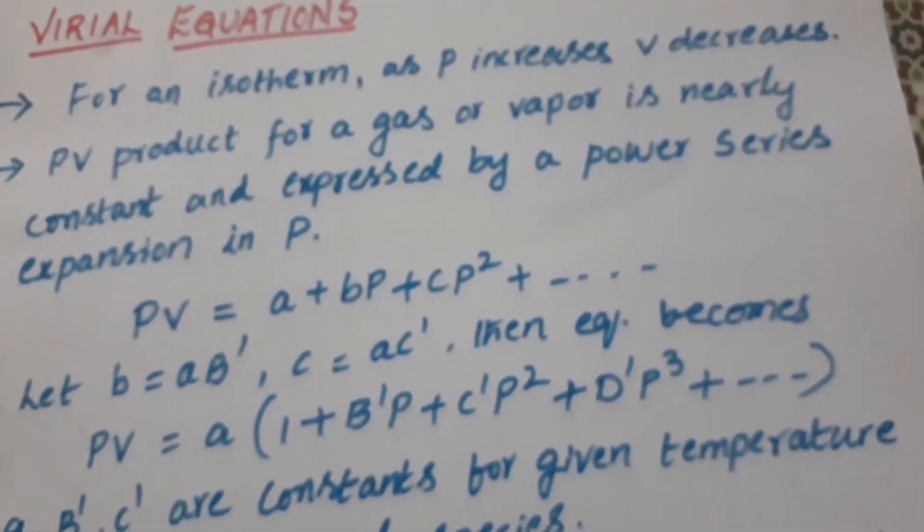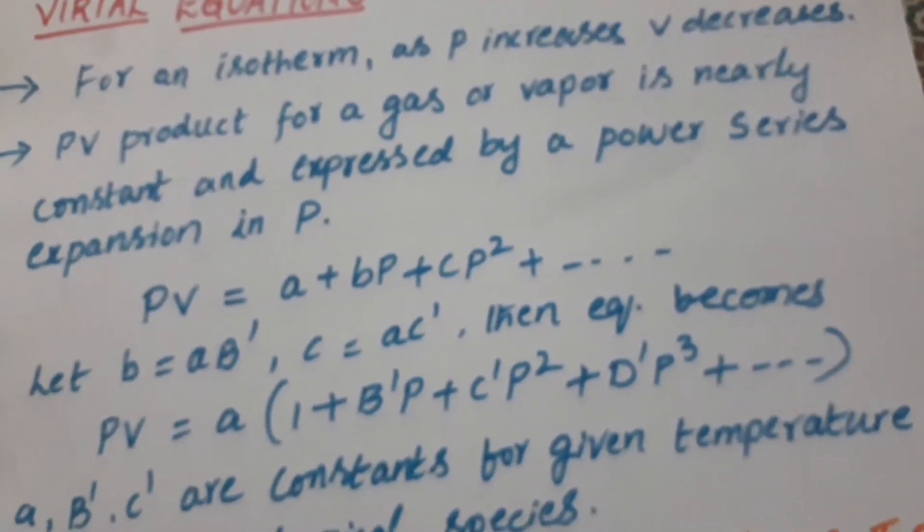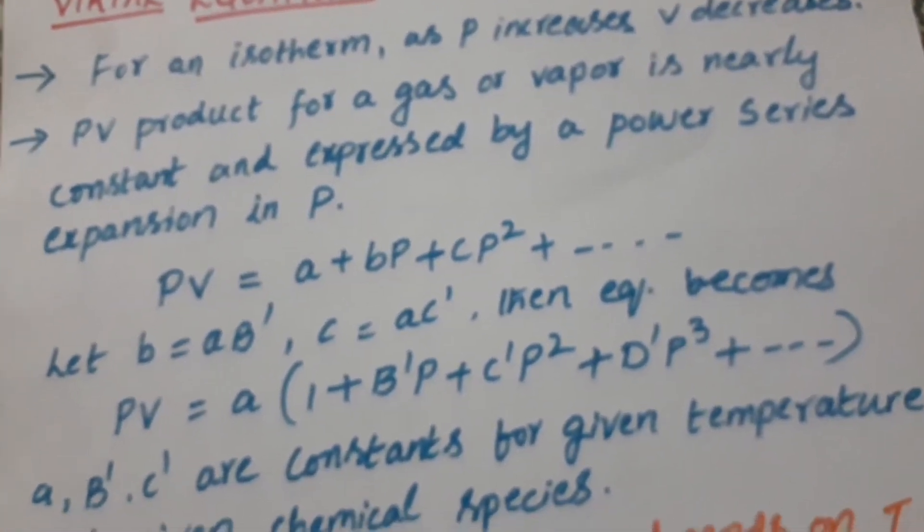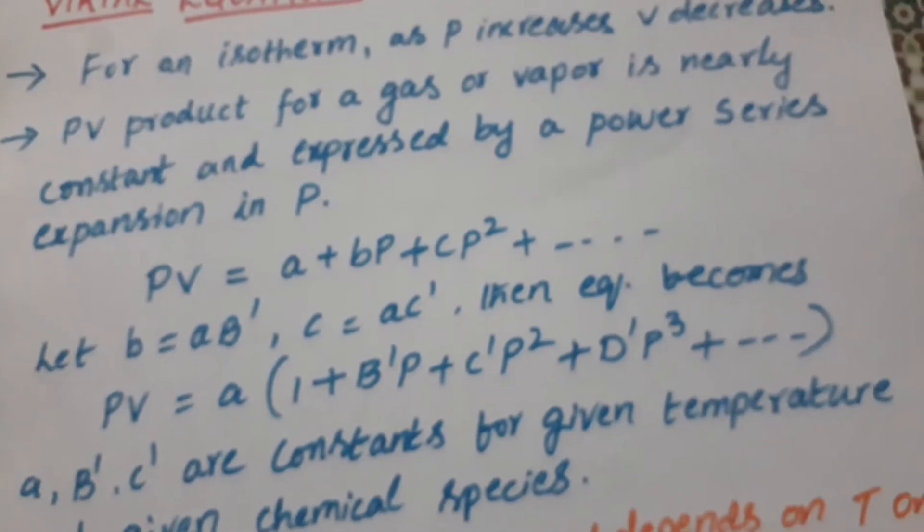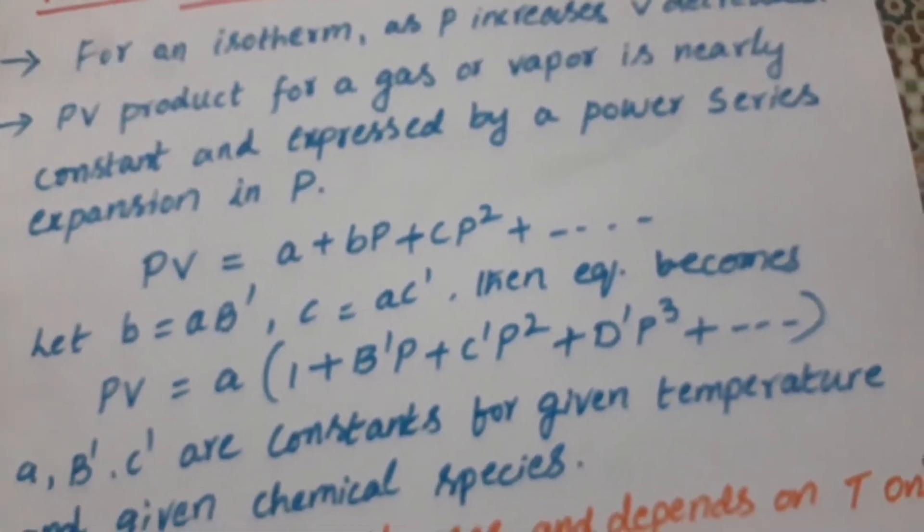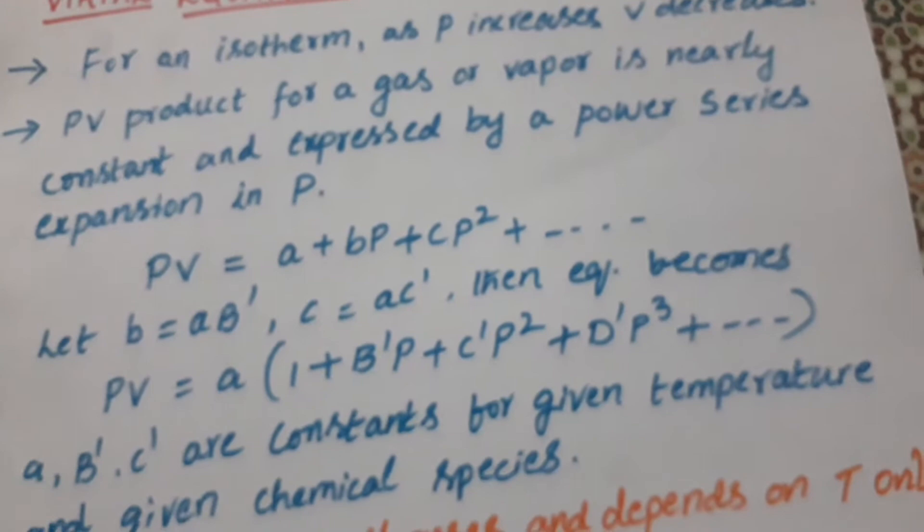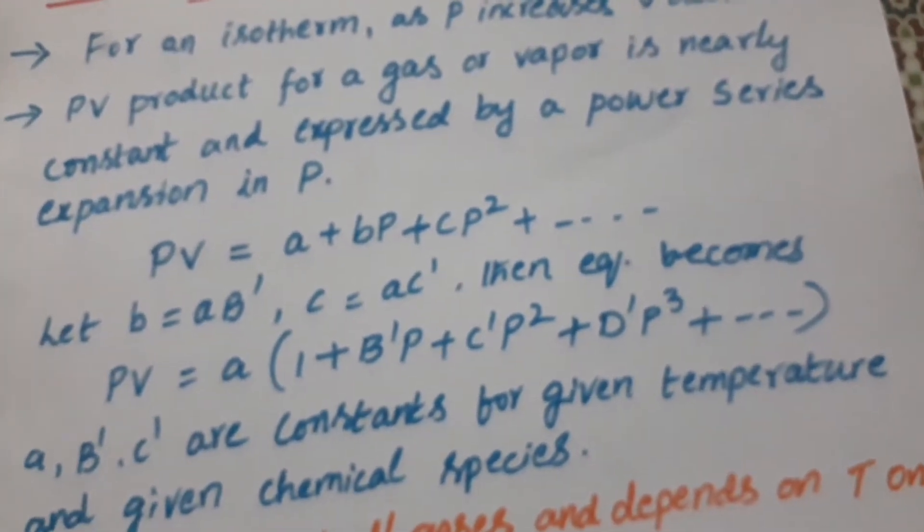So the PV product, if you take the product PV for a gas or vapor, it is nearly constant. And you can express by a power series expansion in pressure.